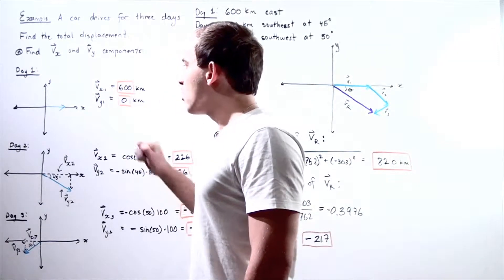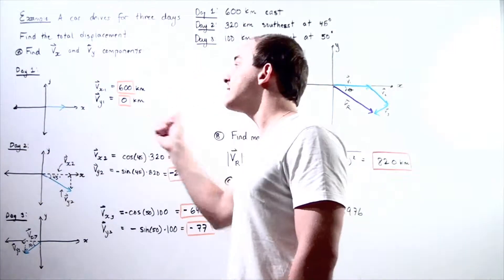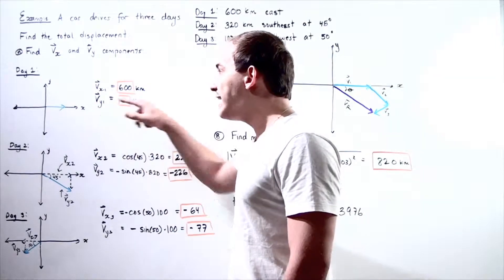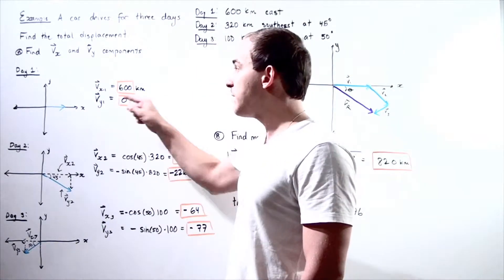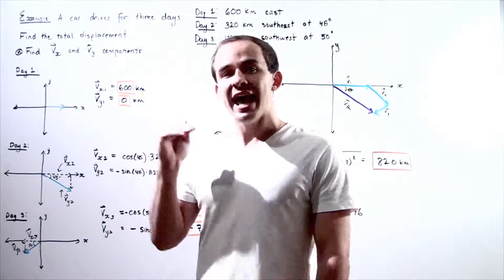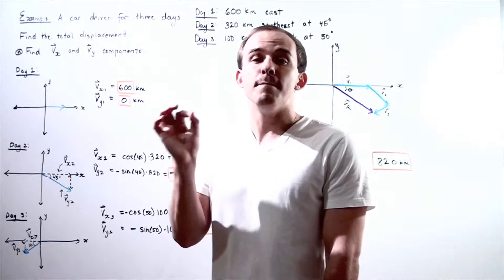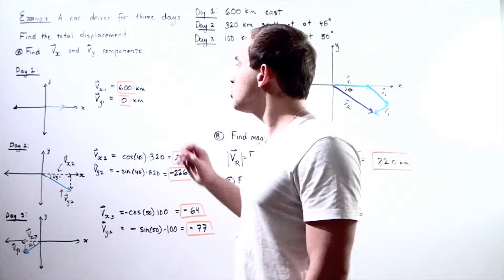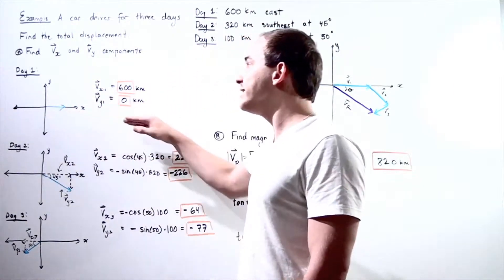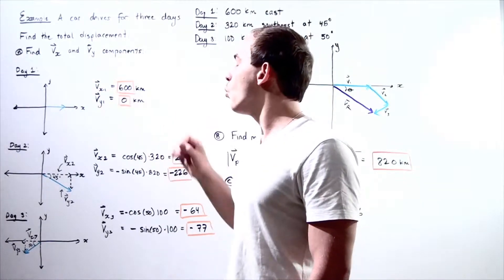During day one, looking at our xy-axis, we drive strictly along the x-axis — not up or down. That means our y-component for vector one is zero. Since we only drive in one direction along the x-axis, vector one equals 600 kilometers, which equals our x-component, denoted x1.